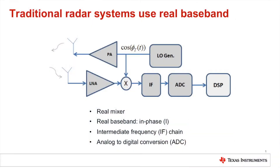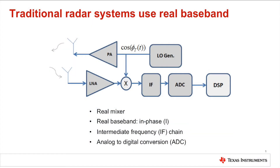especially in the field of advanced driver assistance systems, use real baseband to reduce the cost of implementation in legacy technologies. Typical implementations use a real mixer with real baseband including an intermediate frequency chain or IF and analog to digital conversion or ADCs. Automotive radar systems often adopt frequency modulated continuous waveforms or FMCW to measure range, angle, and velocity of remote objects. The received FMCW signal from remote objects comprises different time delayed and frequency shifted copies of transmitted signals.